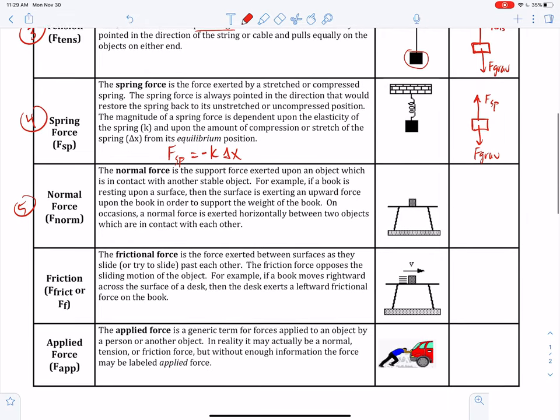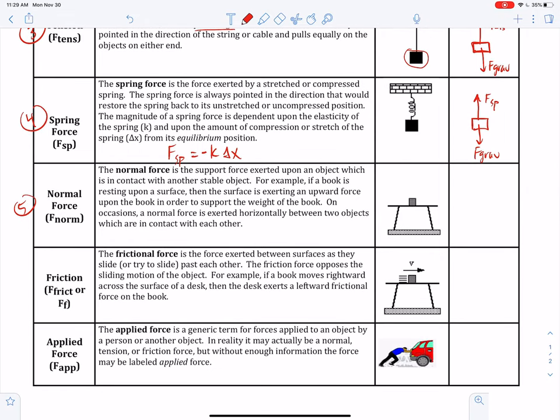Let's keep going. The fifth common force is a normal force. The normal force is the support force exerted on an object which is in contact with another stable object. So it's a support force and a contact force. The objects have to be touching each other. Like, gravity is not a contact force. I don't have to be touching the earth in order to feel the earth's gravity. But this normal force is a contact force.